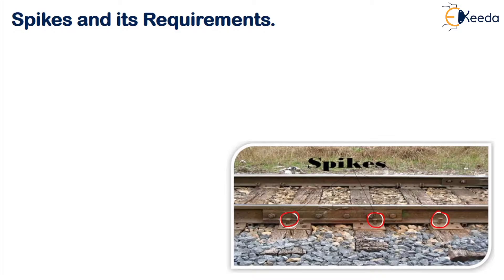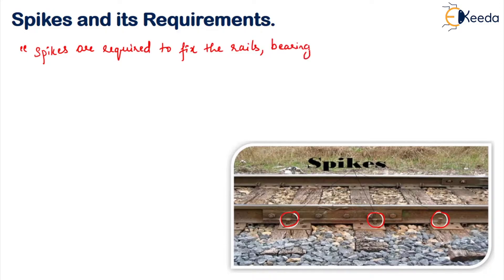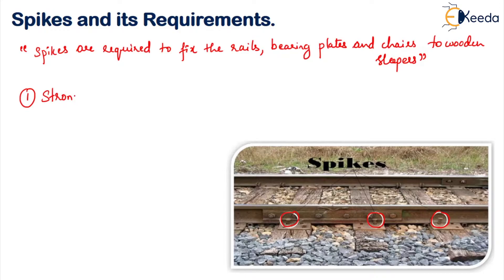Here you can see there are different types of spikes. Spikes are required to fix the rails, bearing plates and chairs to wooden sleepers. Now there are a few requirements of a good spike — it has to fulfill certain requirements. The first one: it should be strong enough so that it can hold your rail, bearing plate and chair in the proper position. That is the first requirement.